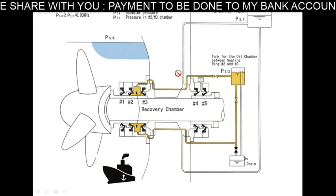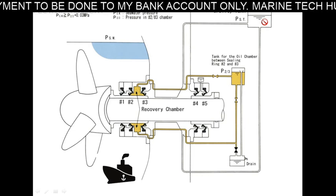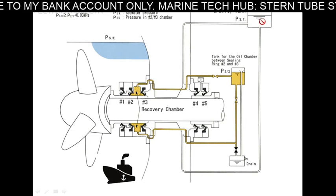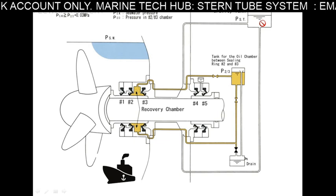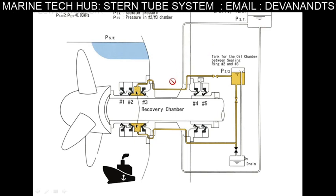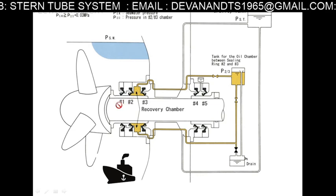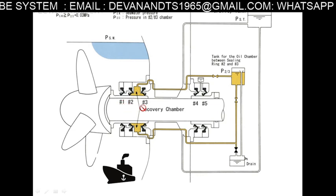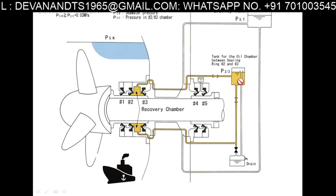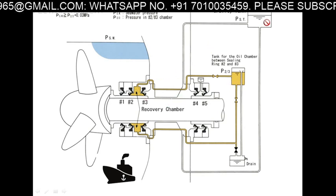On VLCCs, we have a gravity tank up top. When the ship is loaded, we switch the gravity tank from one to another to keep the pressure in the system so sea water doesn't come inside. This is the older type of system that uses the gravity tank, with seals 1, 2, 3, 4, and 5.